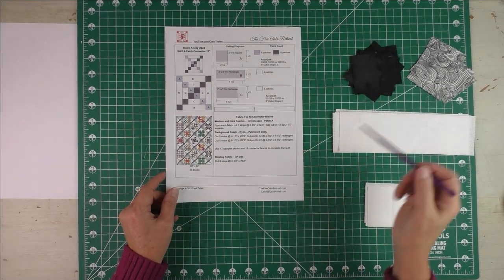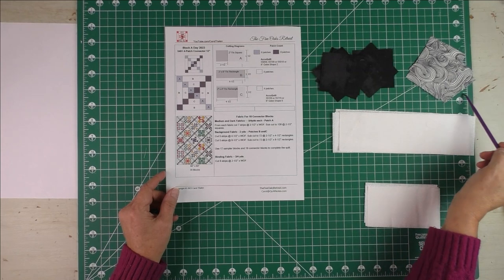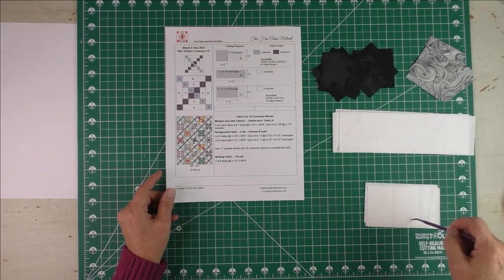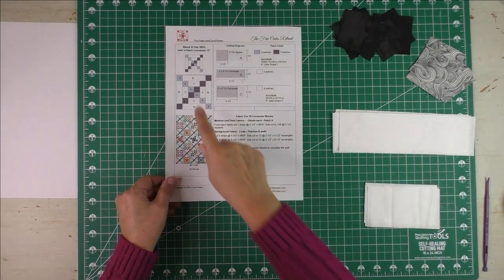Now let's look at the fabrics I've chosen. Here is the dark fabric, here's the medium fabric, and then we have white tone on tone for the background fabric. For this one, we're just going to look at the diagram and put the quilt block together.